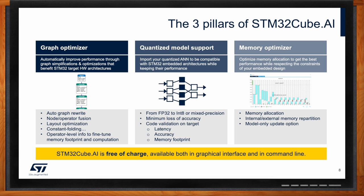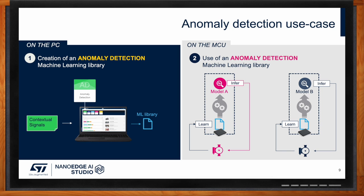Moving to use cases — anomaly detection is a big one, especially for predictive maintenance. ST's customers are beginning to treat this not just as a novelty but as a necessity. With NanoEdge AI Studio's anomaly detection algorithm, you feed in a signal and it outputs how nominal the current state looks — the further the value deviates, the more concerned you should be. The real power is that with ST's technology, you can actually learn on the device after deployment. No cloud, no gateway, no additional hardware anywhere — you train or select a model on your computer, deploy it on your microcontrollers, put them in the field, and the device continues learning.